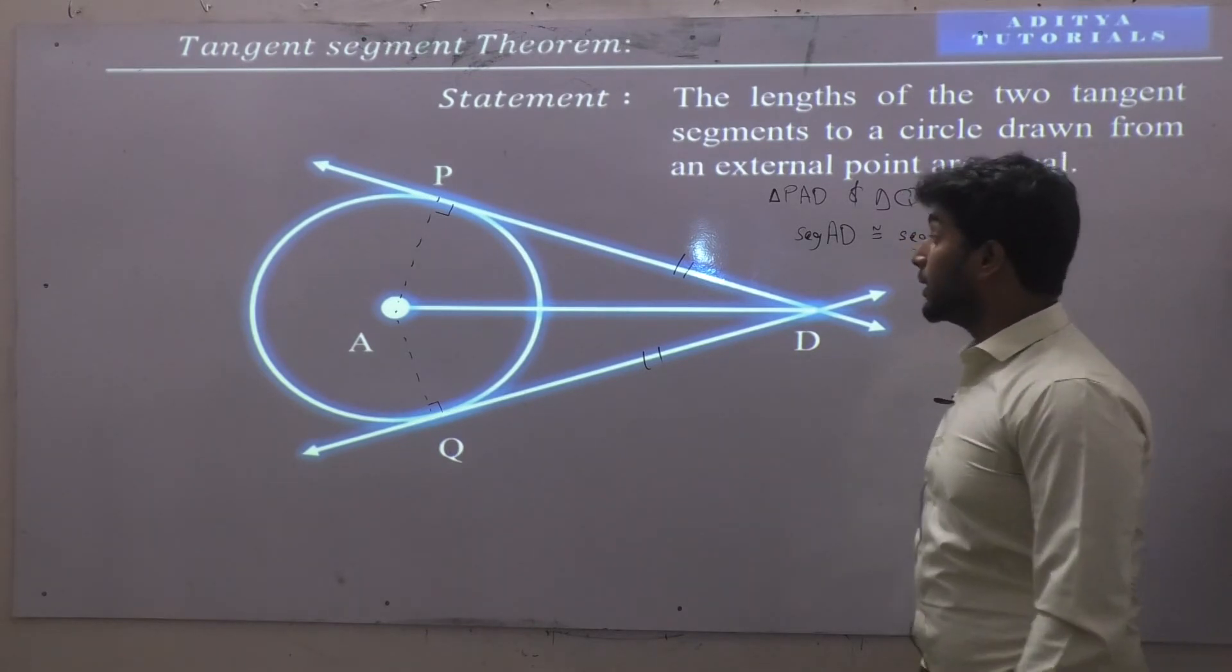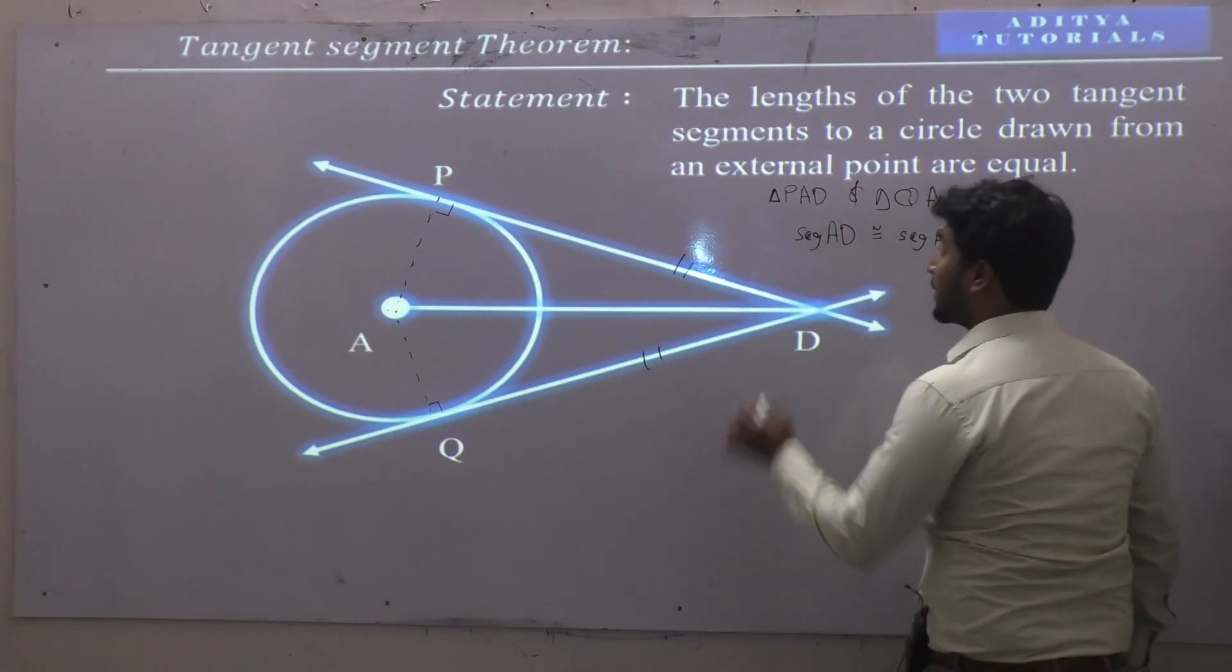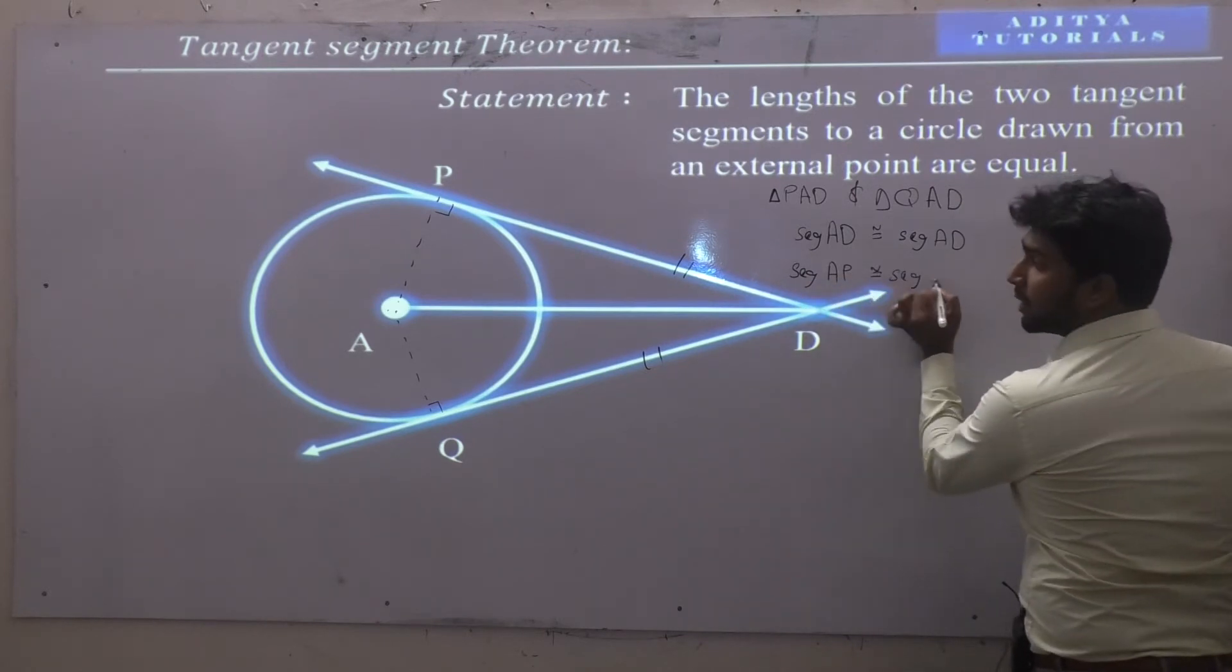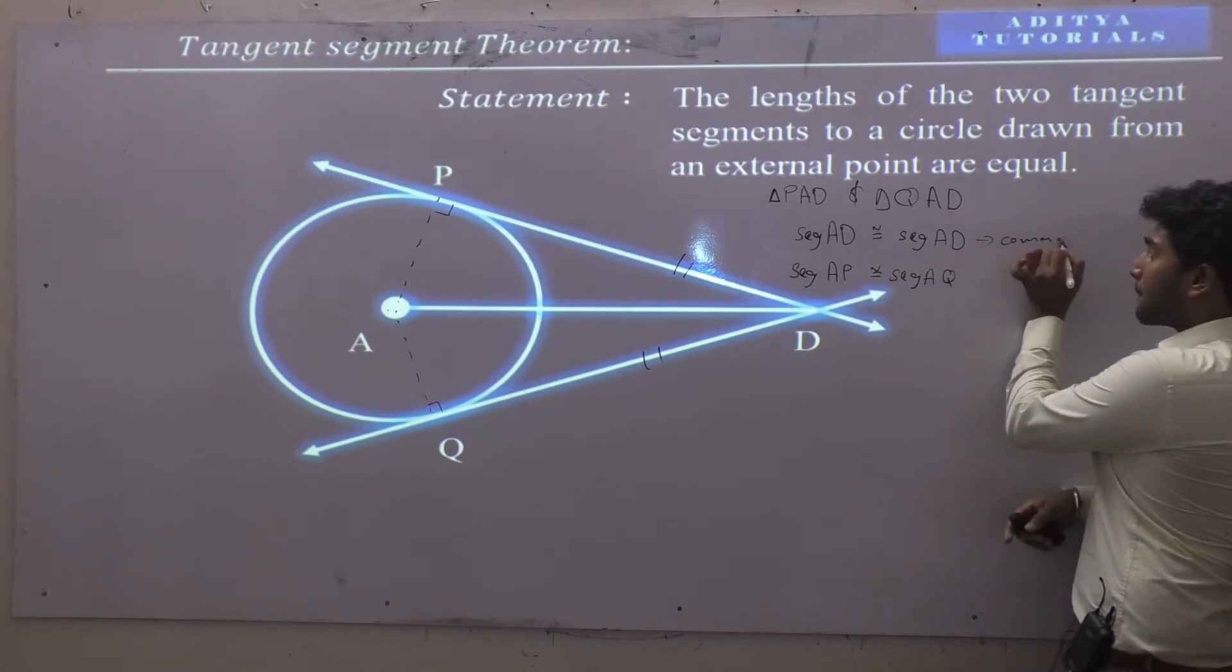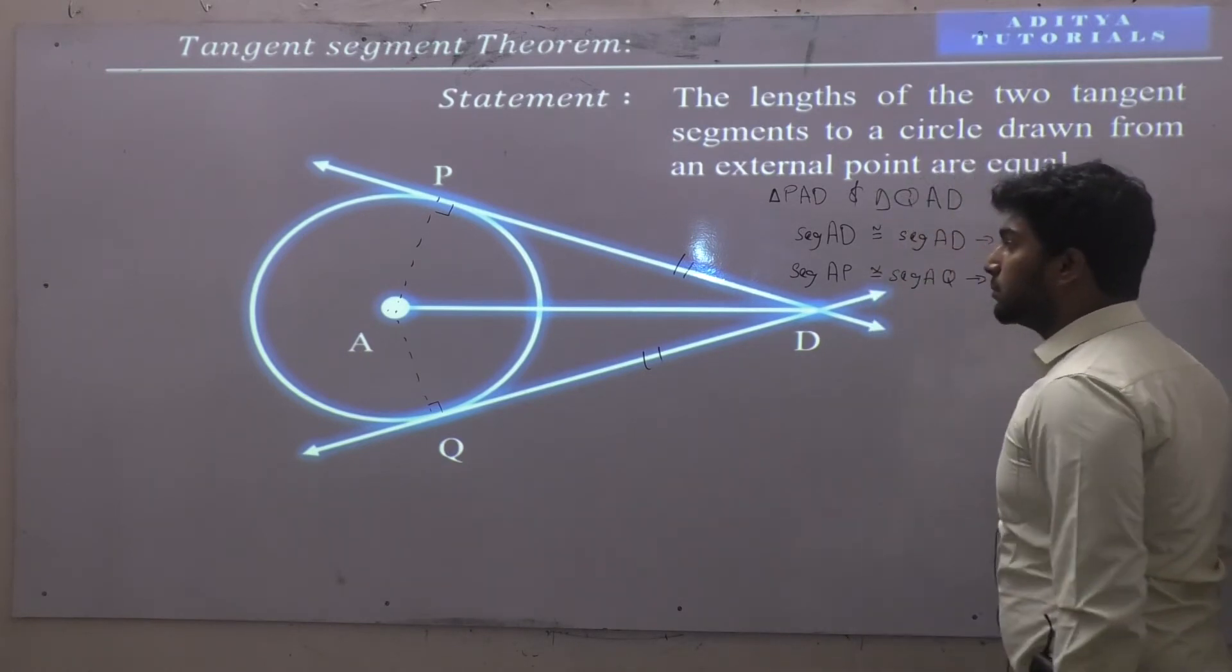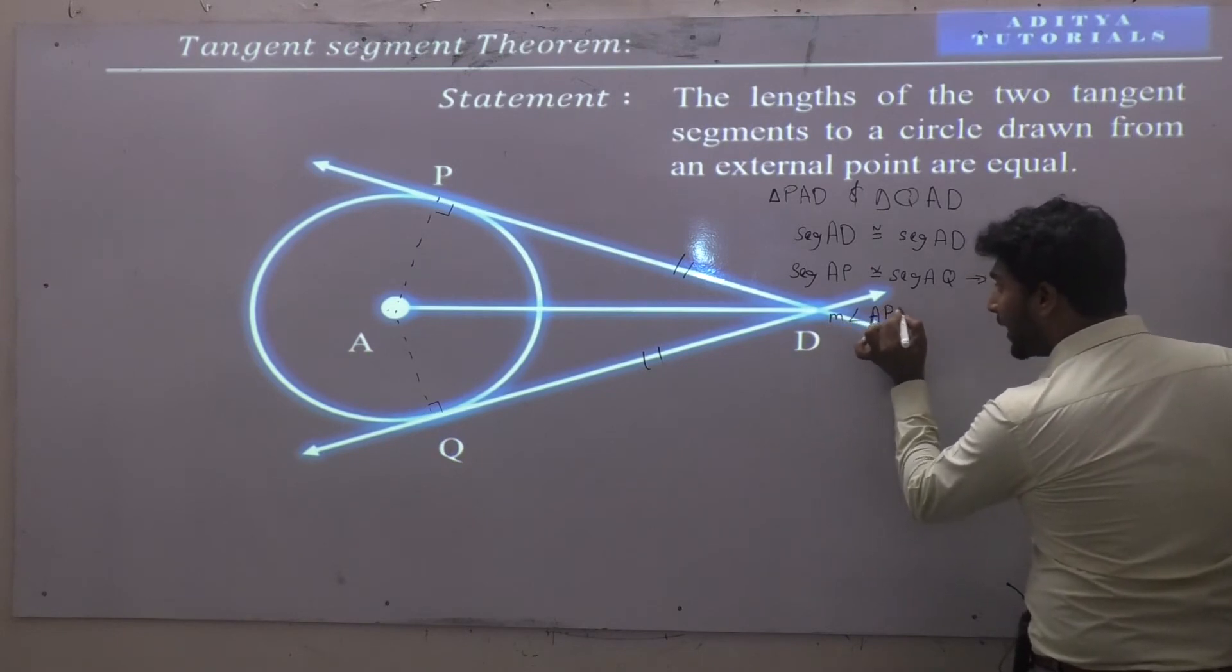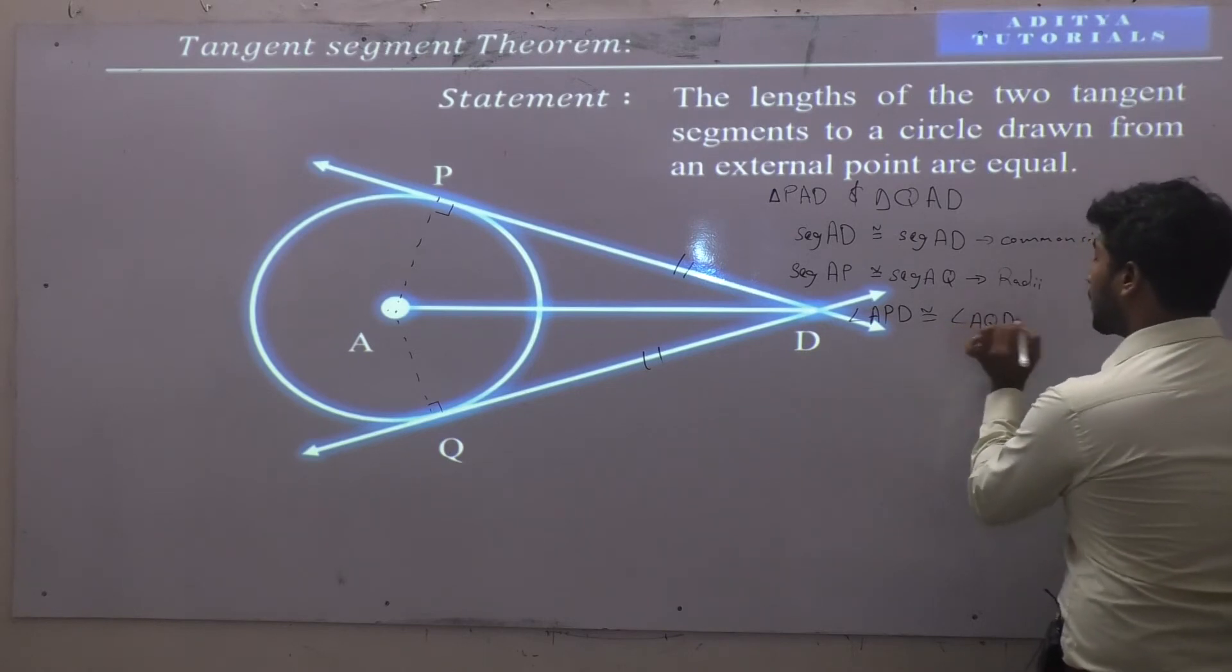Much more I can see, radius AP is equal to radius AQ. That is, segment AP is congruent to segment AQ. Reason: radii of the same circle. What is this? Common side. What is the reason? Radii of the circle. Now one more.